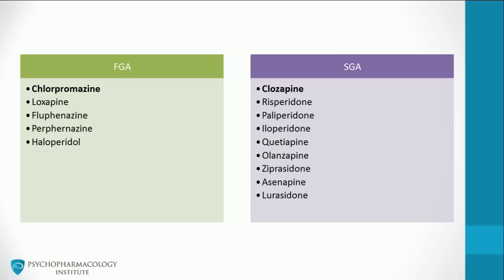Clozapine was the first drug of the second generation antipsychotics. The pharmaceutical industry worked to develop drugs with pharmacological similarities to clozapine, with the intention to replicate clozapine's effectiveness without its side effects. The result is a list that includes risperidone, paliperidone, iloperidone, quetiapine, olanzapine, ziprasidone, asenapine, and lurasidone. Currently, the only third generation antipsychotic is aripiprazole.